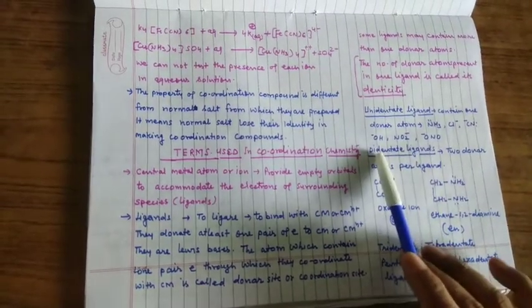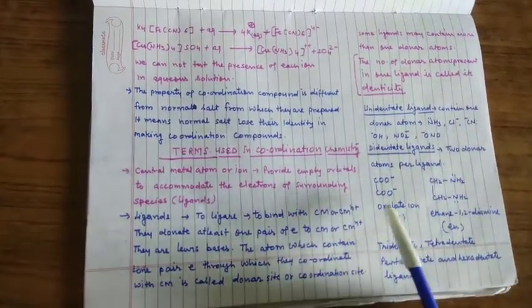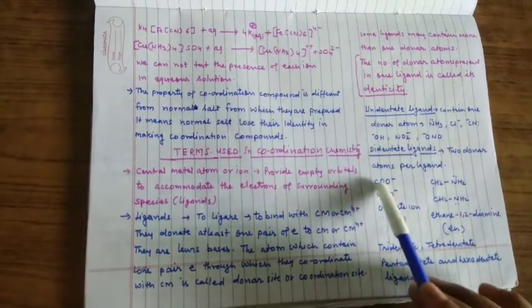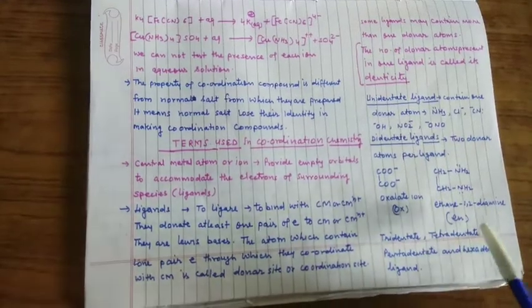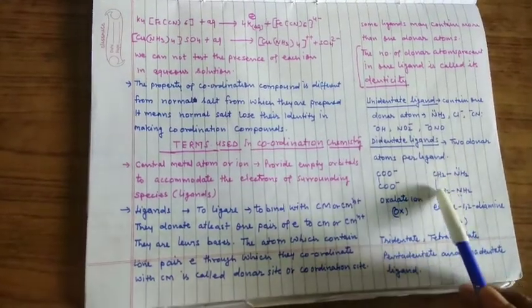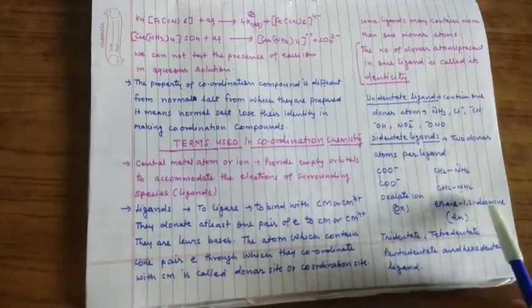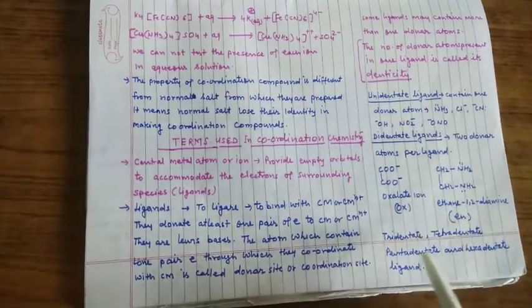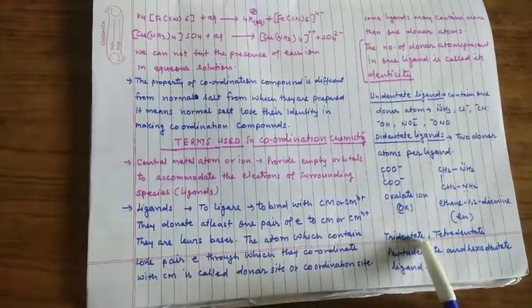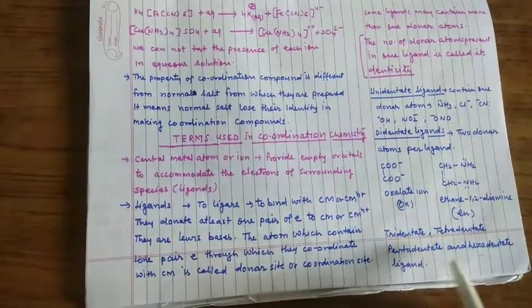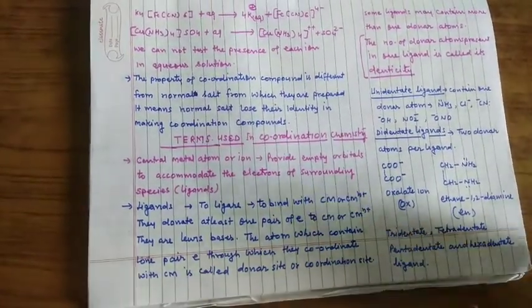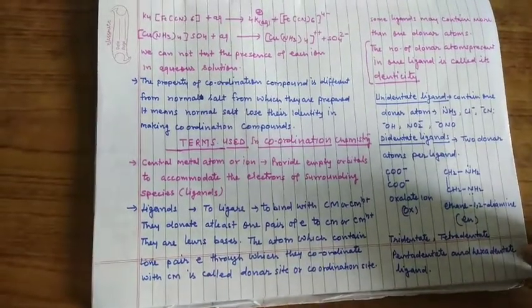Bidentate ligand, di means two, जिसमें दो donor atoms हों जैसे oxalate COO- COO-, इसको abbreviate करते हैं OX से। Similarly ethane-1,2-diamine, इसको abbreviate करते हैं EN से। Similarly tridentate three donor atoms, tetradentate four, pentadentate five, hexadentate ligand six donor atoms.